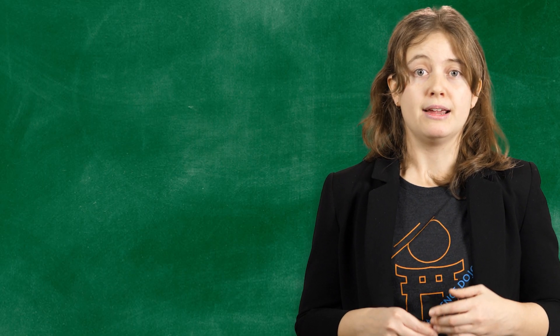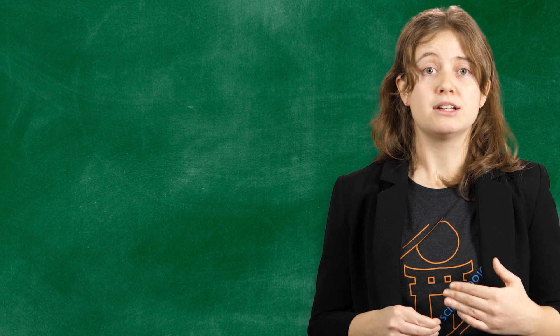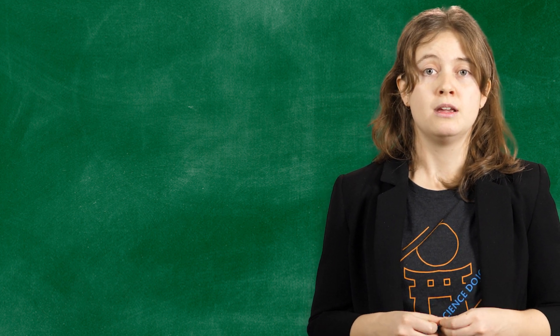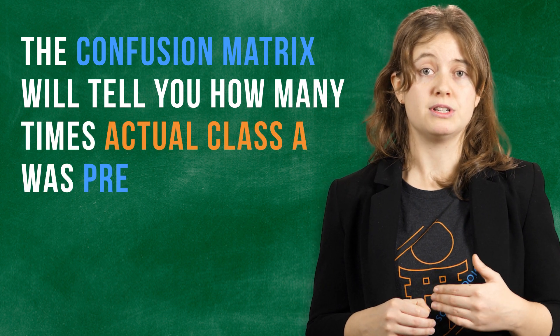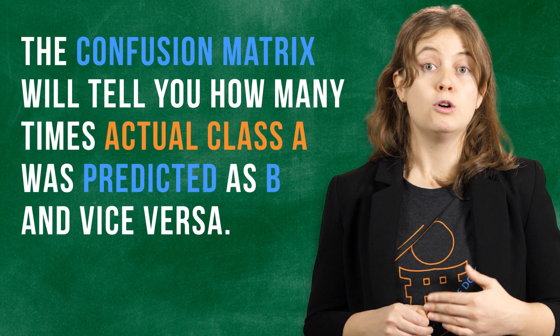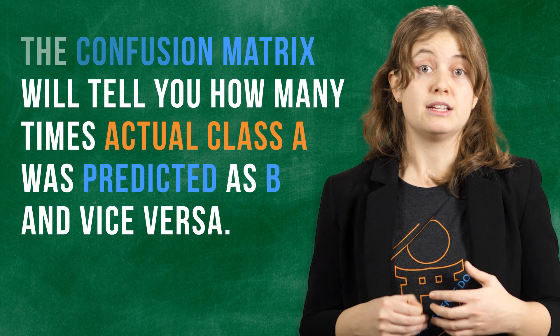Either way, you're comparing how many were correctly or incorrectly classified from each class. The confusion matrix will tell you how many times actual class A was predicted as B and vice versa, or if they were correctly classed as their true labels.